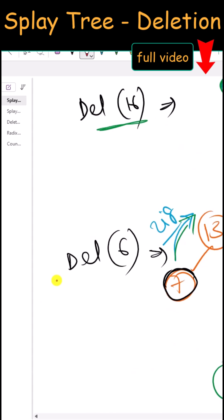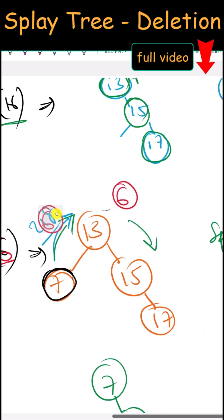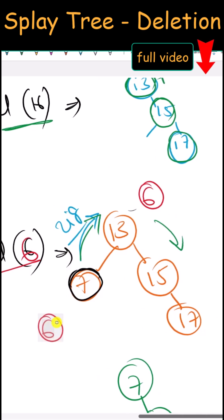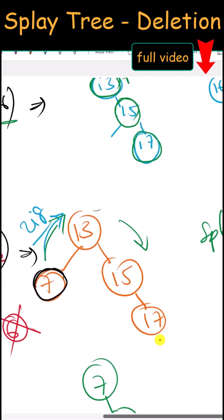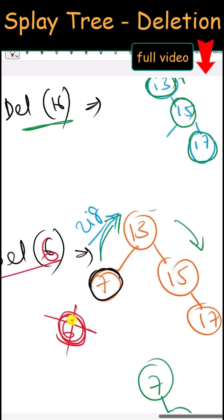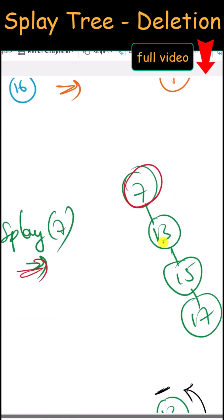Now let's try to delete node 6. Searching: 6 is less than 13, less than 7. Node 6 is not present in our splay tree — this is a special case. Although the node is not present, we still perform splaying on the last accessed node. Because 7 was the last element accessed while searching for 6, we perform splaying on 7 — a right rotation, or zig rotation — and 7 becomes root with 13 dragged down.